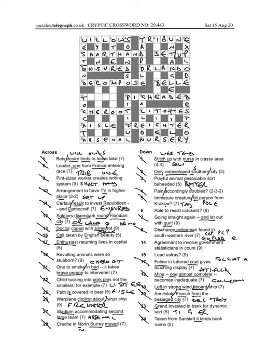Seventeen across, enthusiast, well enthusiast can be a nut, returning, so going the other way, and if something is, it lives maybe, tunis, I've had that clue before I think, I didn't like it then either.